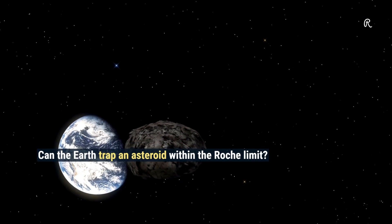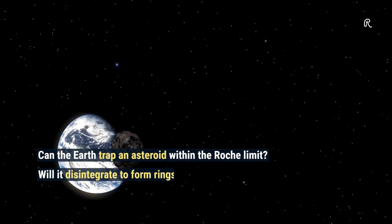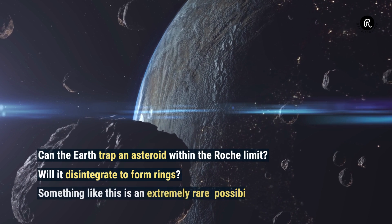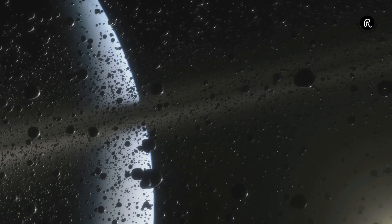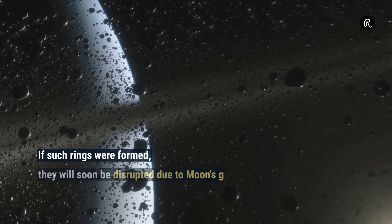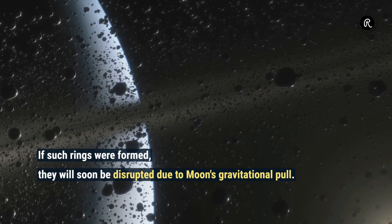Can the Earth trap an asteroid within the Roche limit? Will it disintegrate to form rings? Something like this is an extremely rare possibility. If such rings were formed, they will soon be disrupted due to the Moon's gravitational pull.